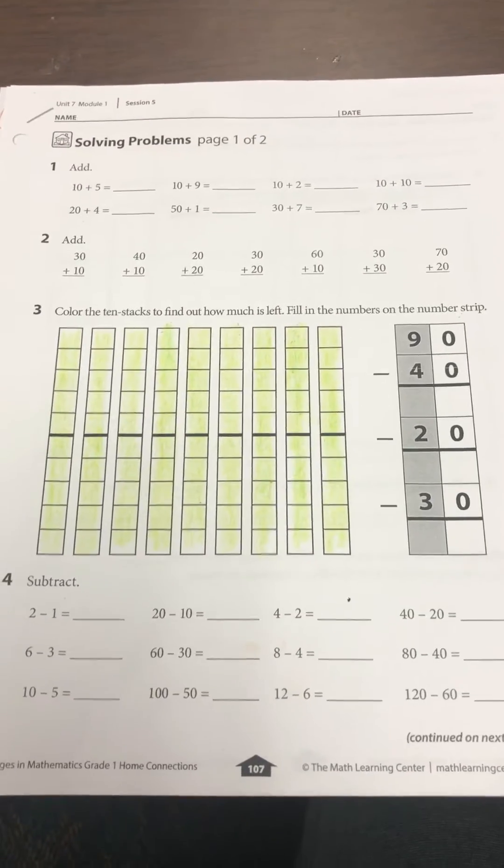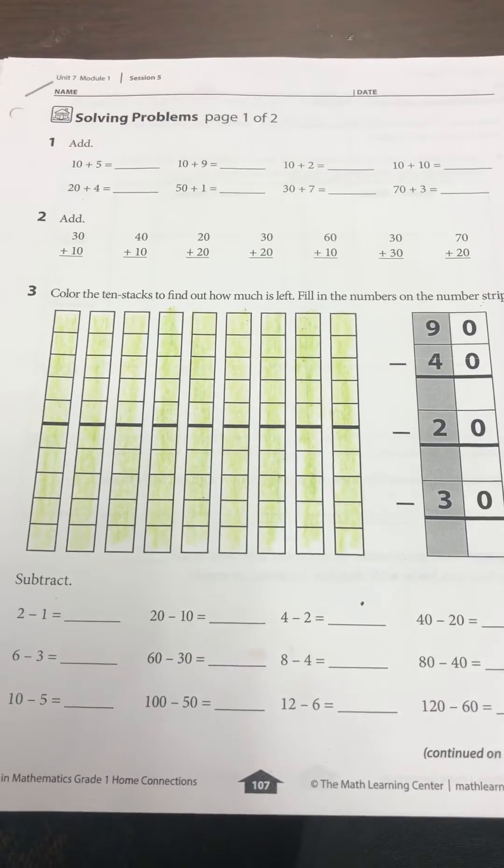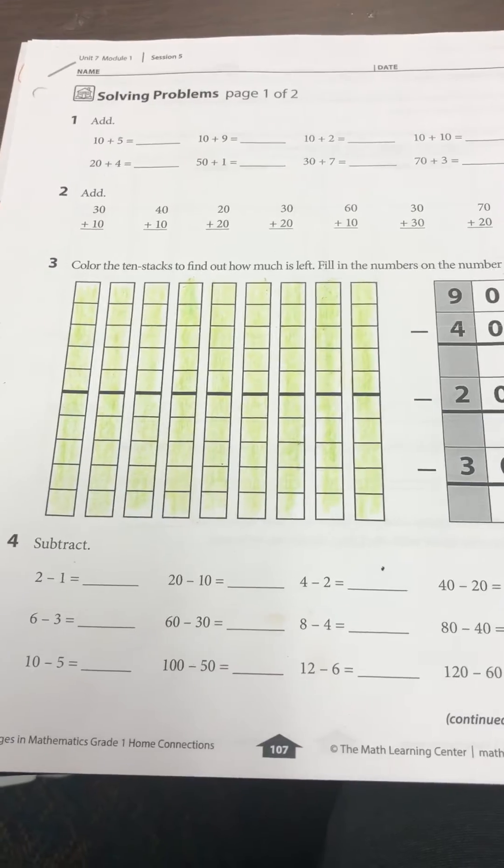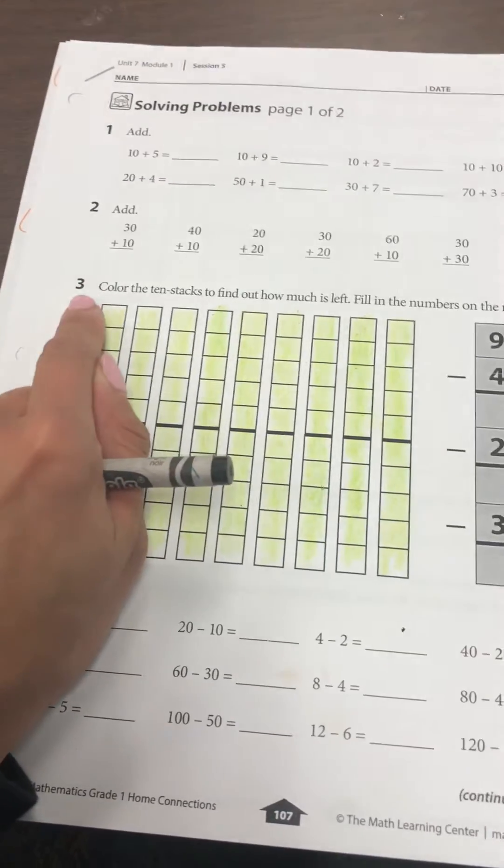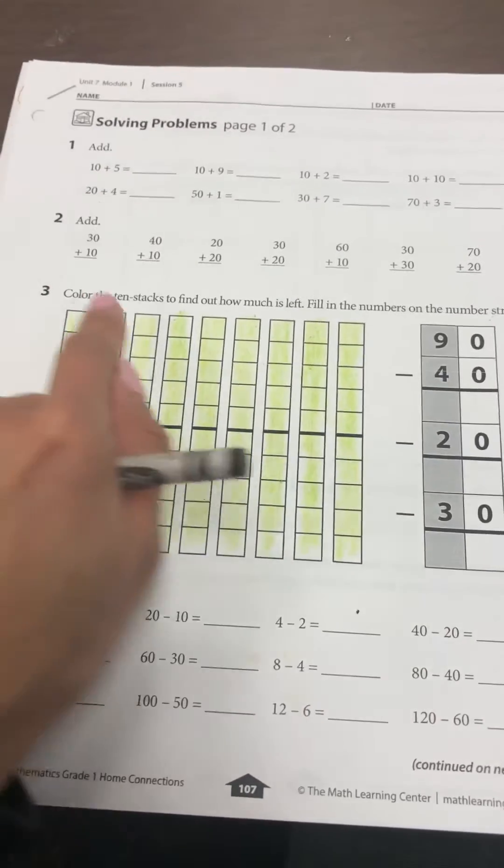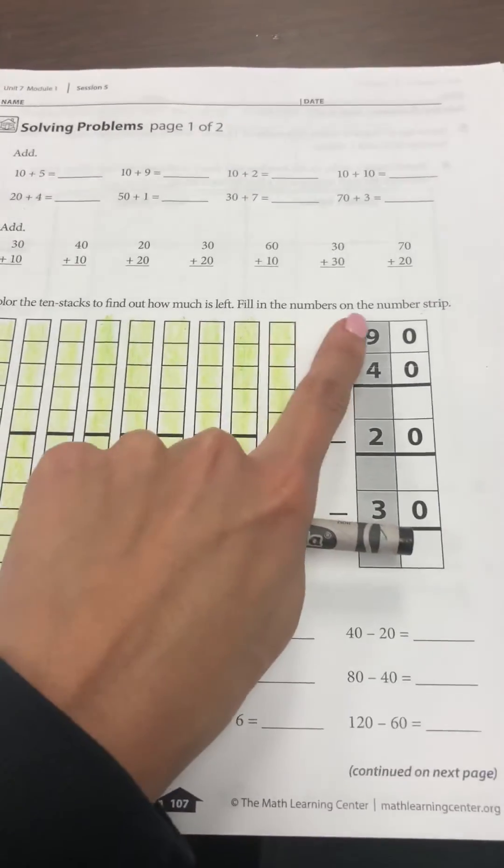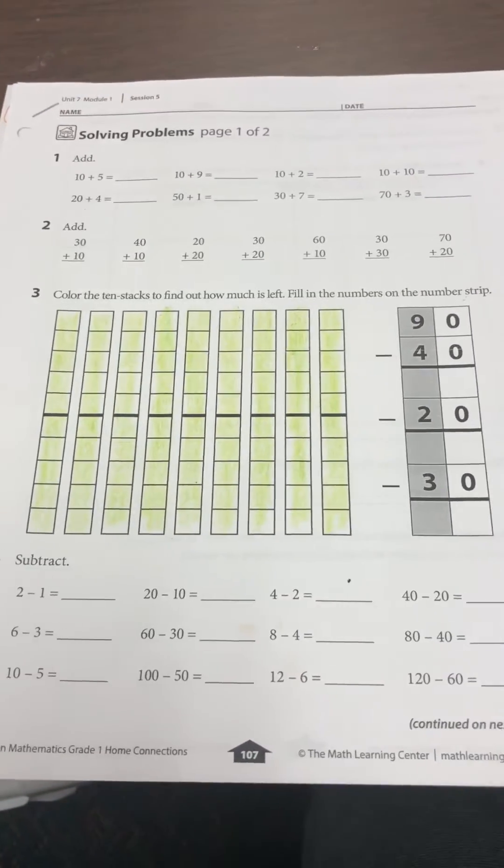Hey first grade families! Tonight this is what your child is bringing home for homework. It's called Solving Problems page one of two. Now last year when I sent this home with my students, we had a lot of parents asking about problem number three. It says color the ten stacks to find out how much is left, fill in the numbers on the number strip. So I wanted to show you the steps on how to go about this problem.